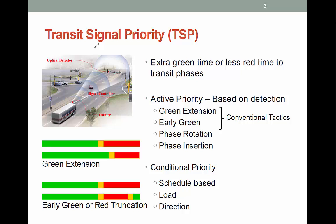Let's start by defining what TSP is. Basically, transit signal priority, also known as TSP, involves holding the green light for a few more seconds so that the bus, tram, or whatever the street transit vehicle might be could clear the intersection without delay. It could also mean shortening the red light if the vehicle were to arrive while it is red. The former is known as green extension and the latter is known as early green or red truncation.